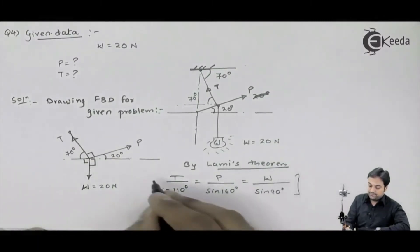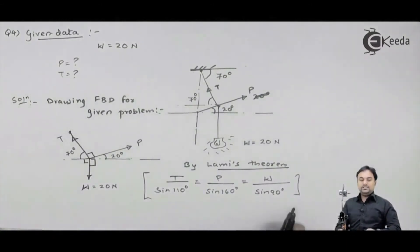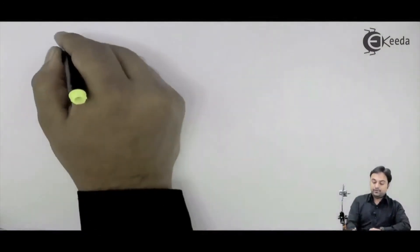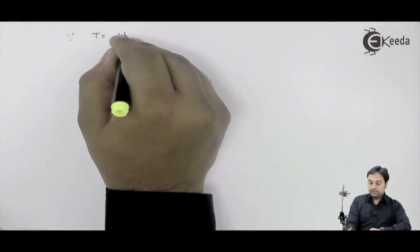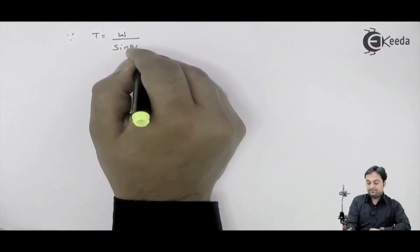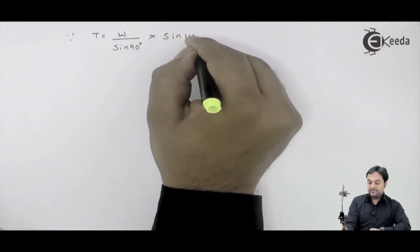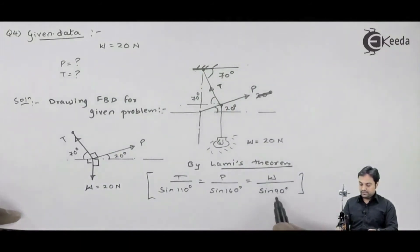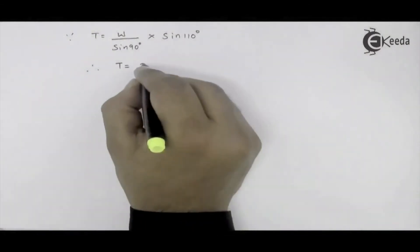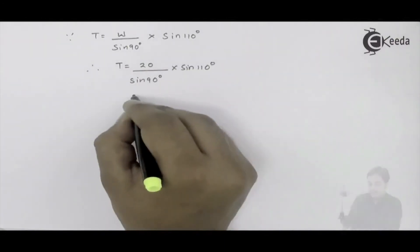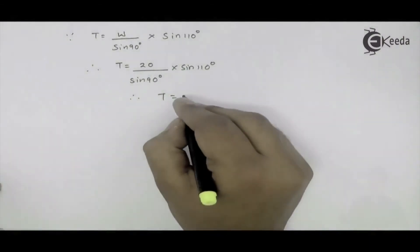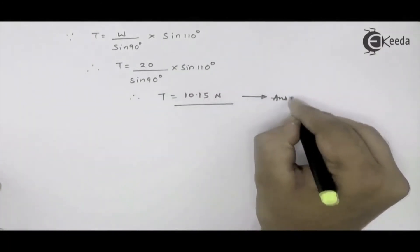So here I have an equation. In this equation we can easily calculate the value of T and P. First, I will go for the calculation of T. I will write down since capital T is equal to W divided by sin 90 multiplied by sin 110. Therefore, this capital T is equal to W by sin 90 into sin 110. W is 20 Newtons. So if I calculate this, I will get my answer of capital T which comes out to be 10.15 Newtons. My first answer.